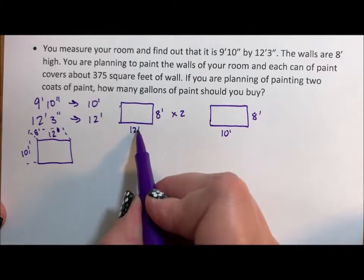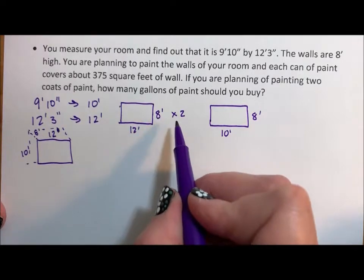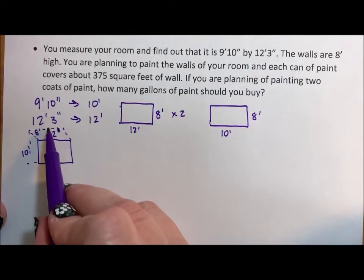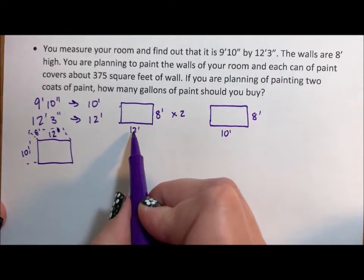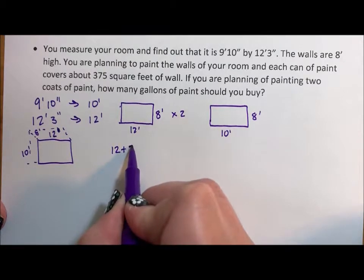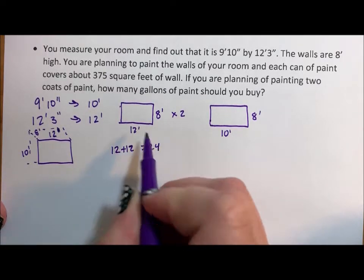So 12 by 8, I have to multiply those. So I'm starting to look at this. 12 plus 12 is 24, and it's a little bit short, right?